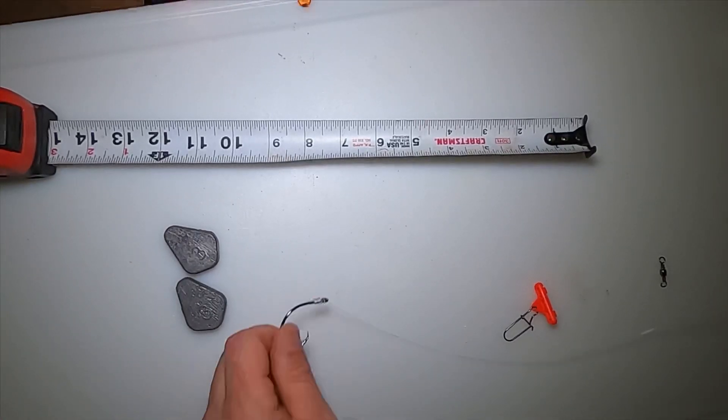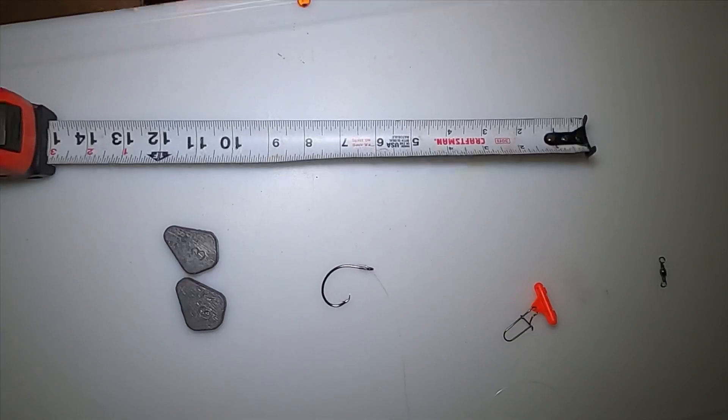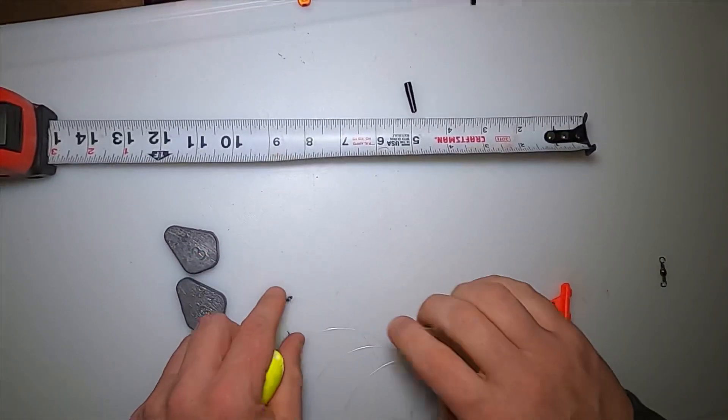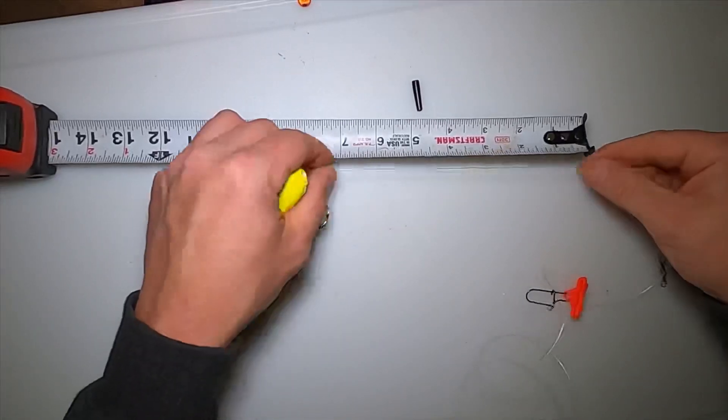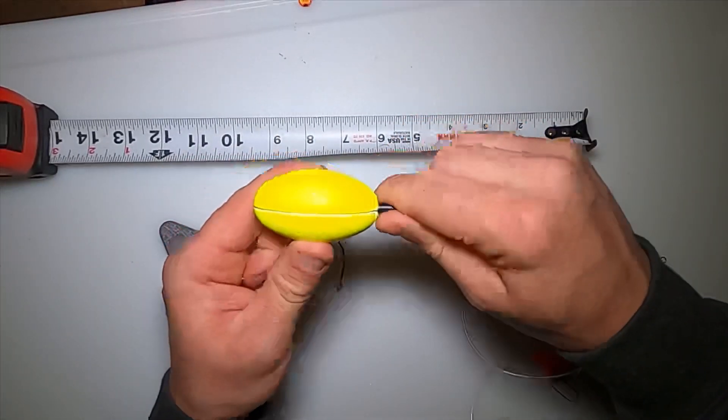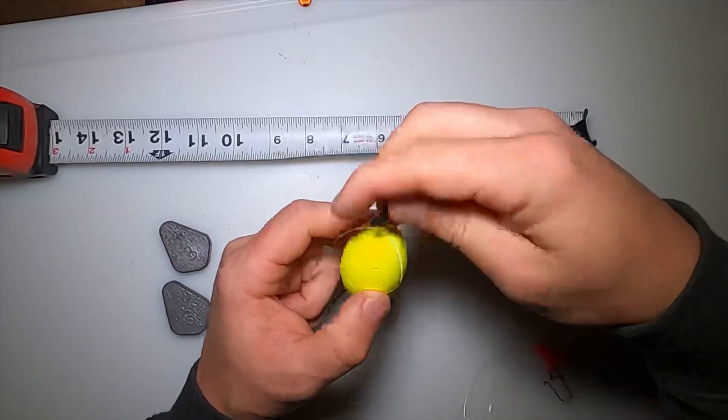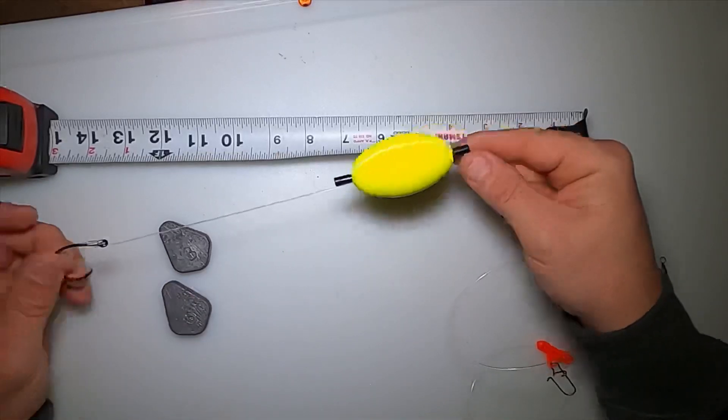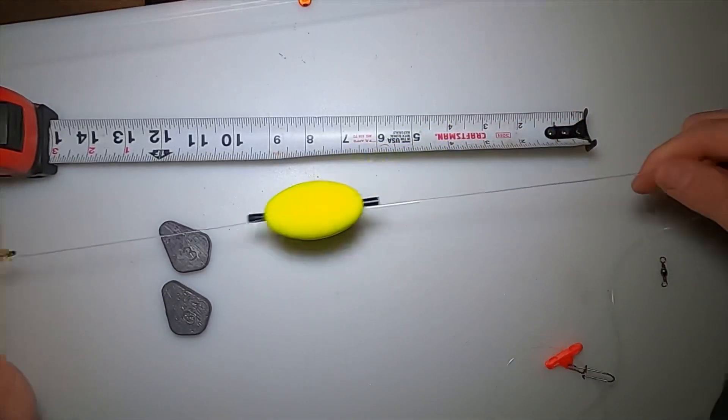Then take our peg float, and you can use the tape measure - six, seven inches. That's more like it. So you got that about six inches off.